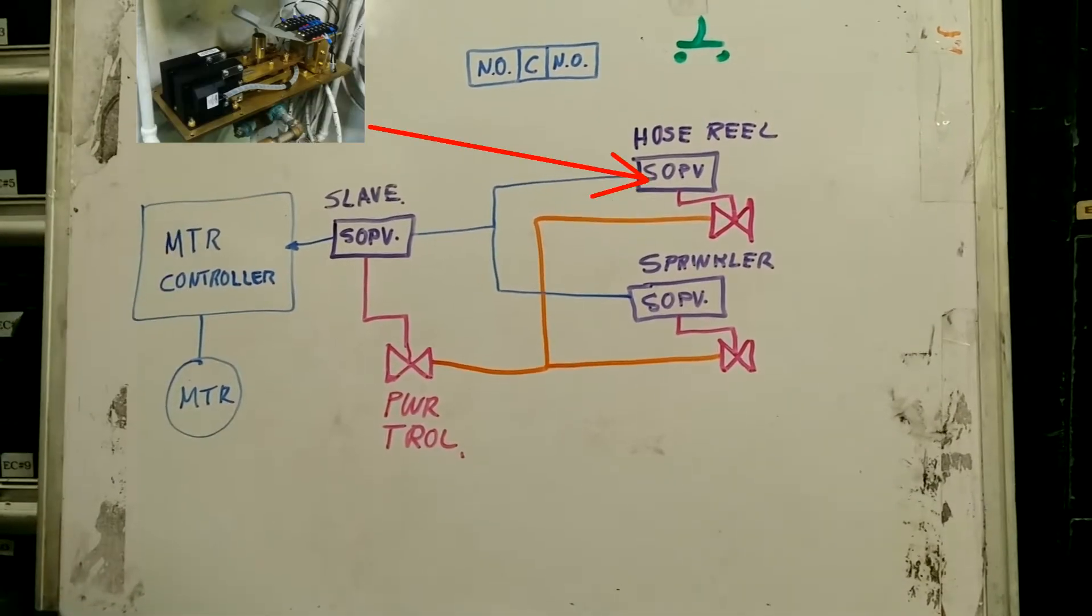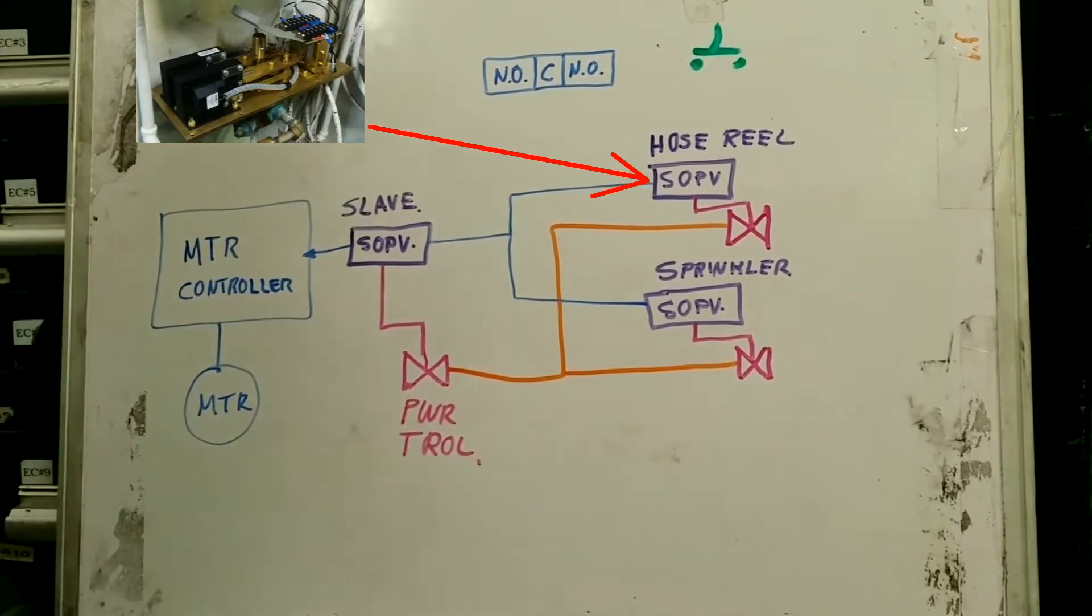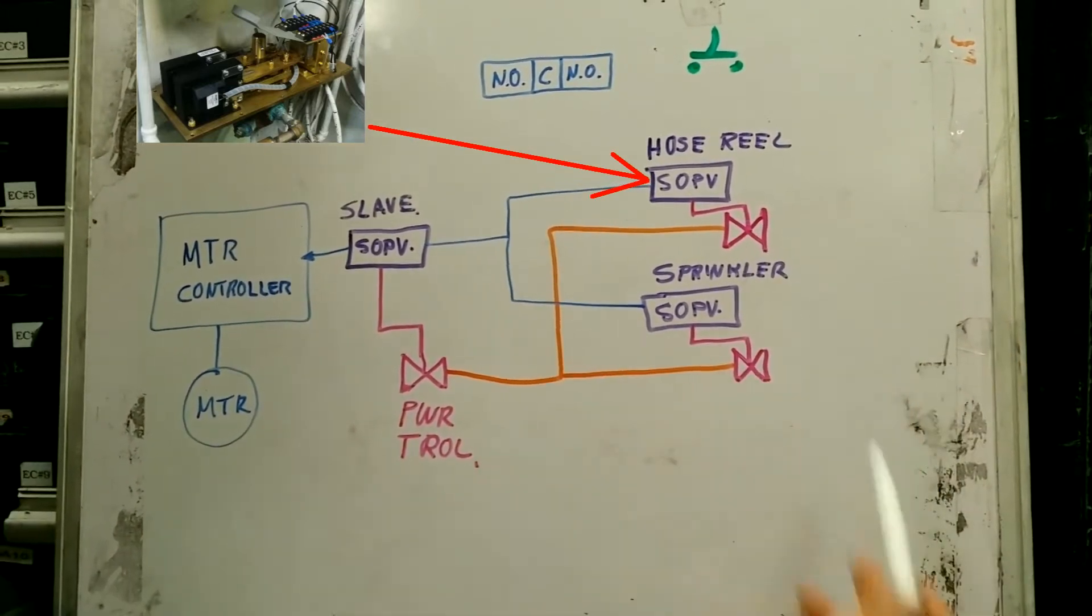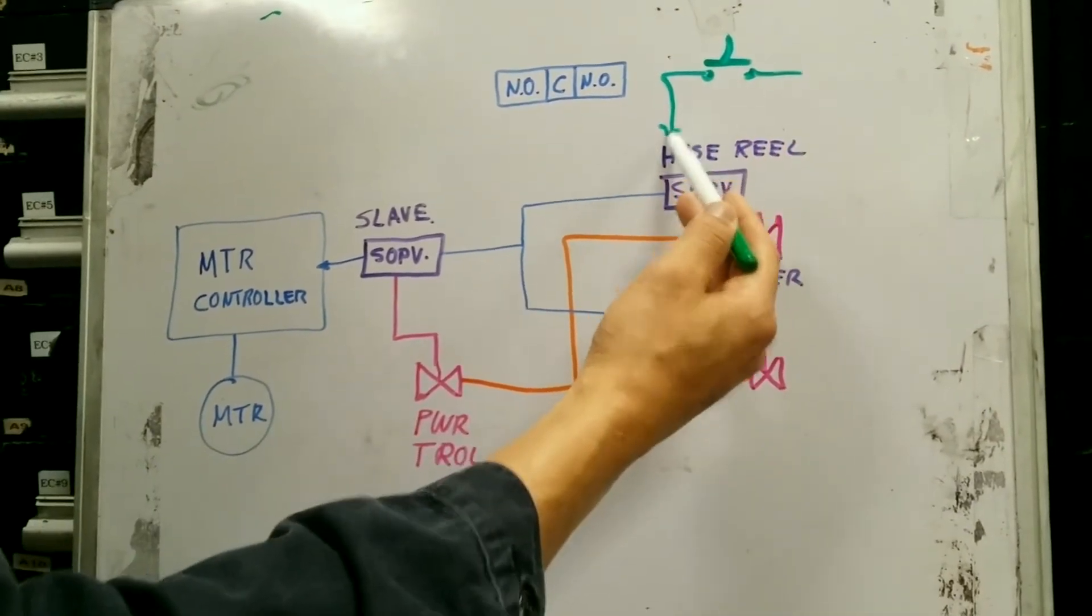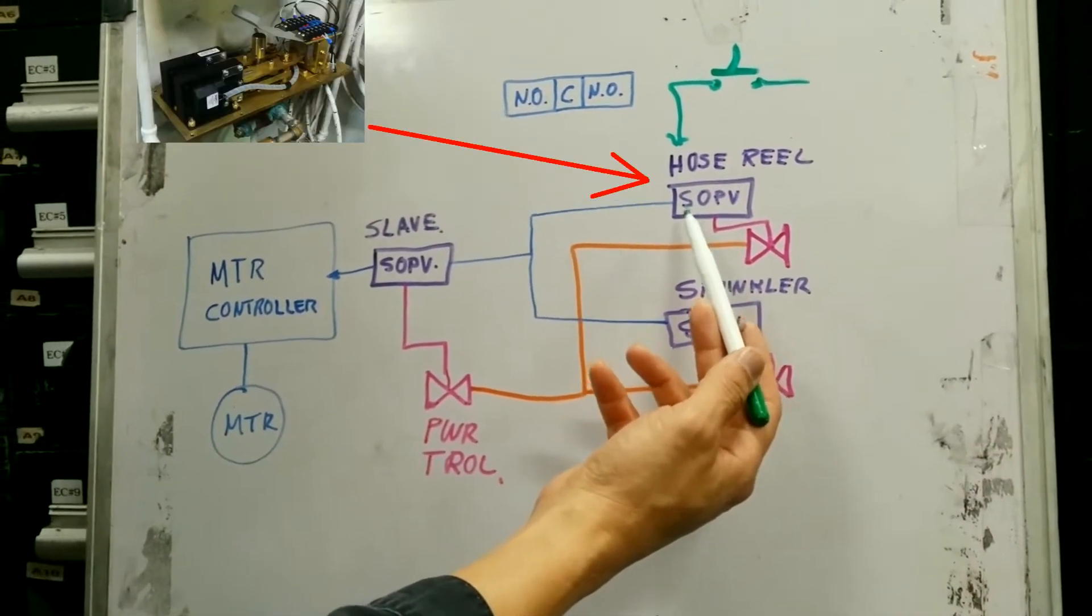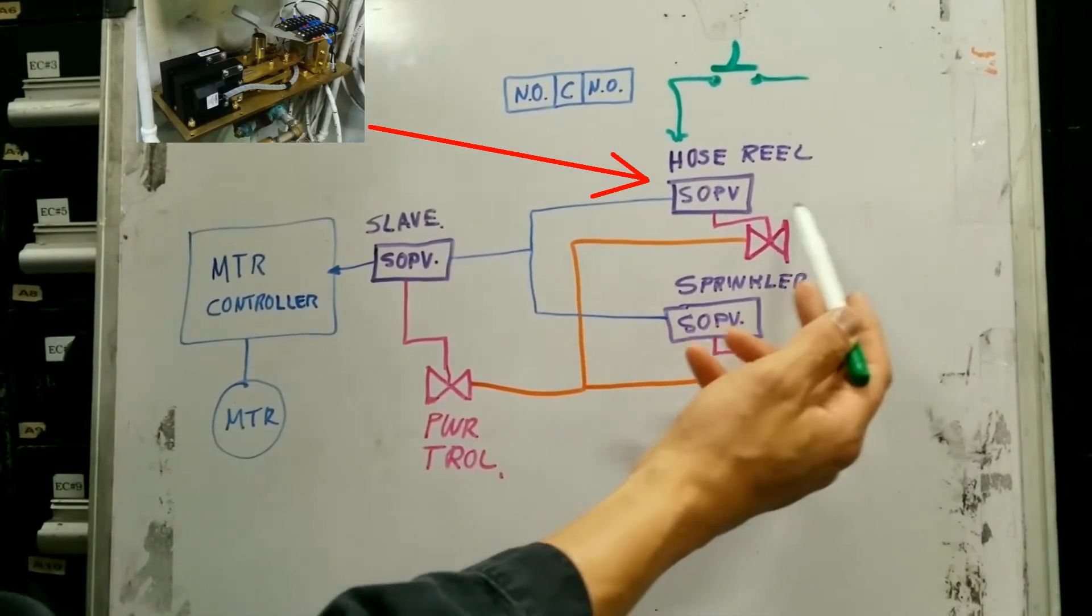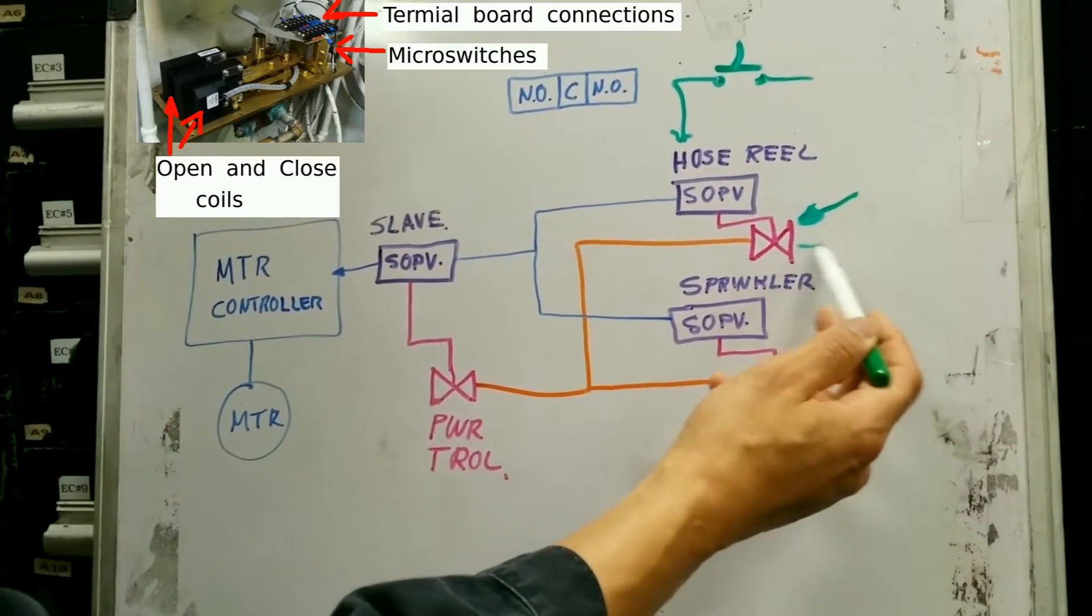The AFFF system is a little bit more complicated than this, but the gist of it is this. So somewhere, let's say there's a fire and somebody wants to press the hose reel button. Whenever they press, they put a signal into the SOPV valve open coil. When the SOPV valve opens, that SOPV opens a local valve for the sprinkler.